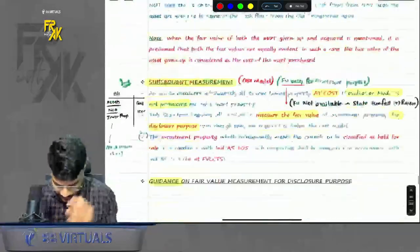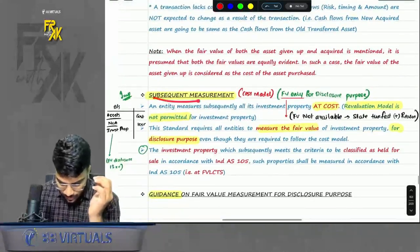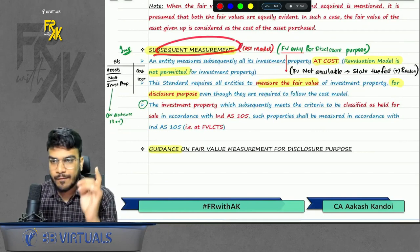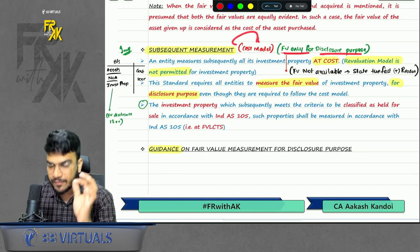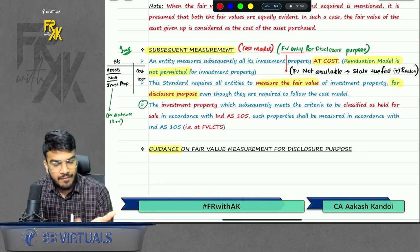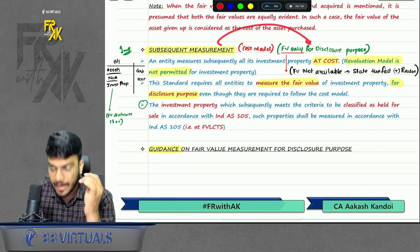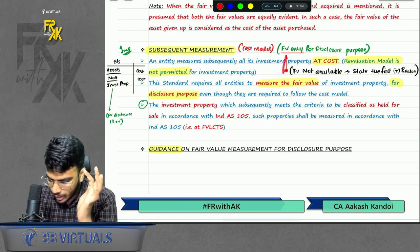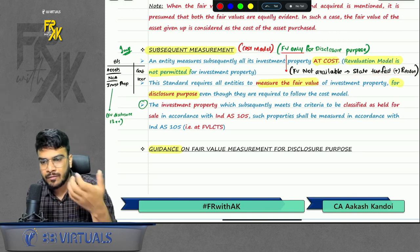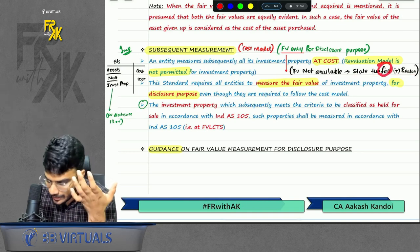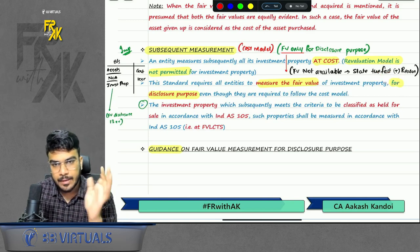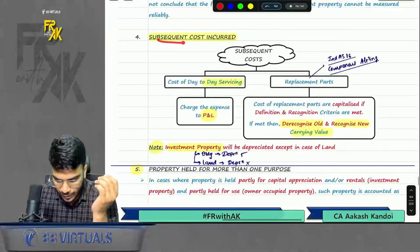For subsequent measurement, this is different from IND AS 16 and 38. Here we have only one model, which is the cost model. Fair value is only determined for disclosure purposes. If anyone asks whether fair value is to be computed, the answer is yes, but only for disclosure purpose. If the fair value is not available, you will have to state that fact along with the reason why it cannot be computed.